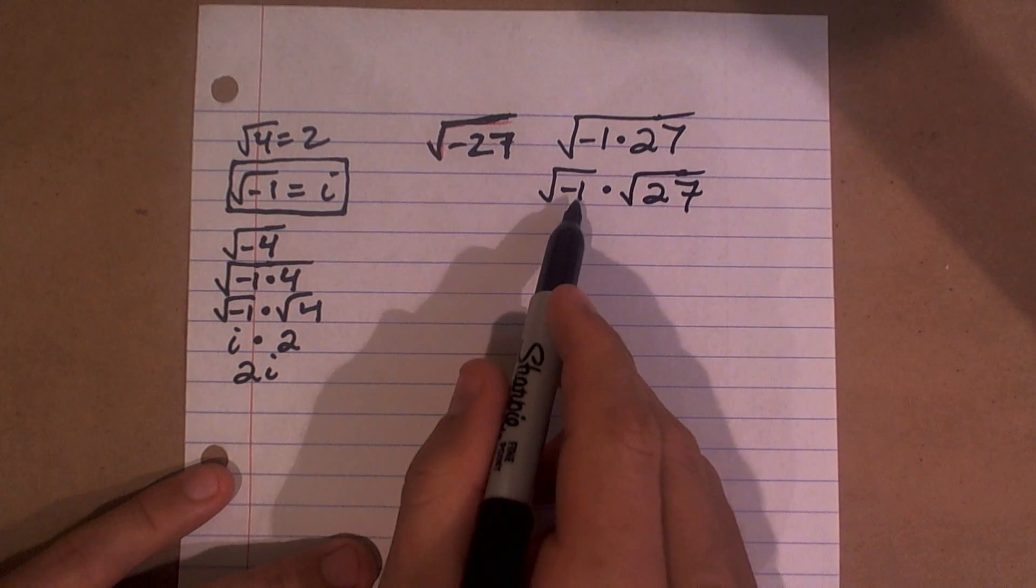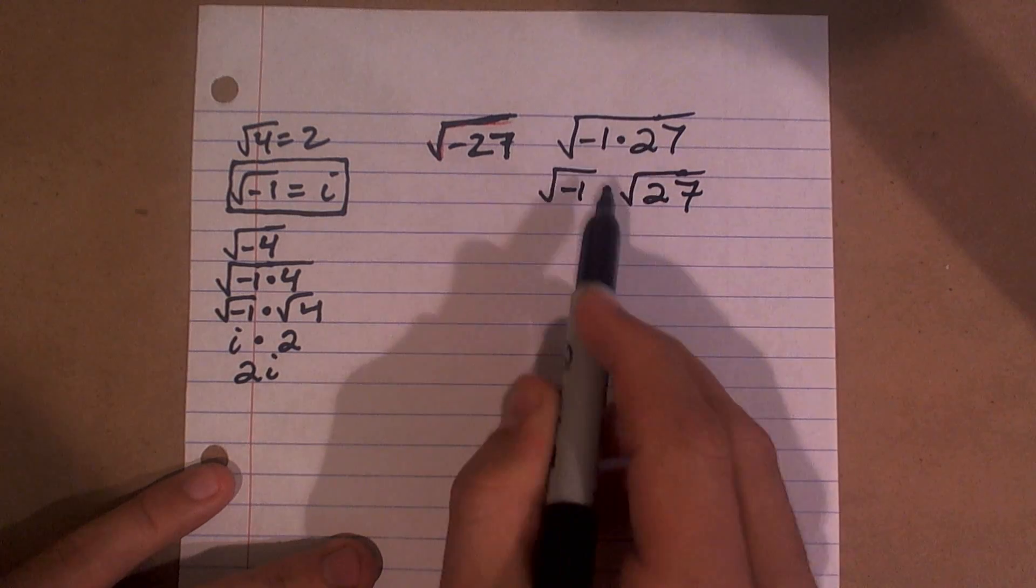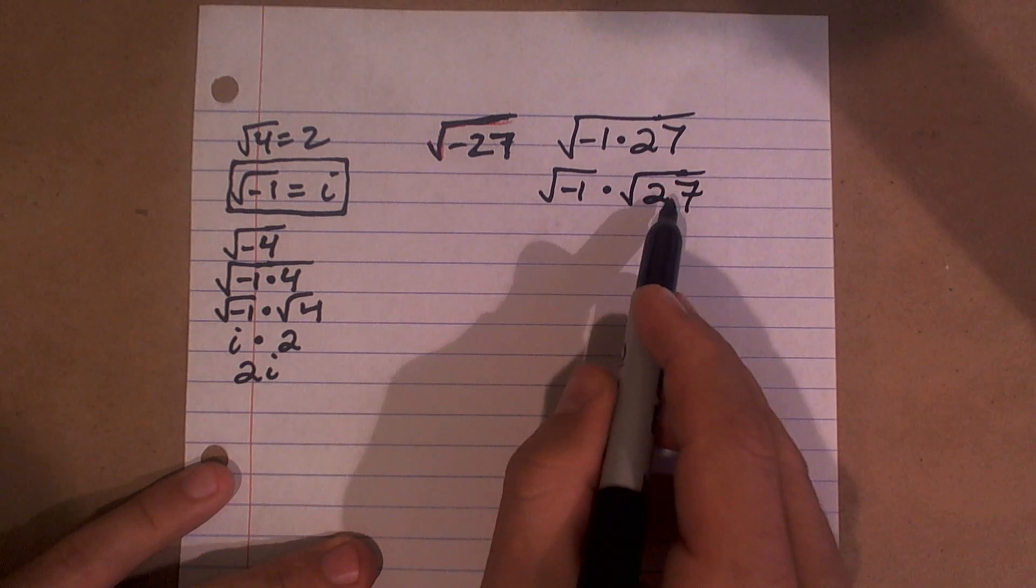So we know that the square root of negative 1 is going to equal i. But now what I did is I got rid of my negative, so now I just need to see if I can simplify 27.